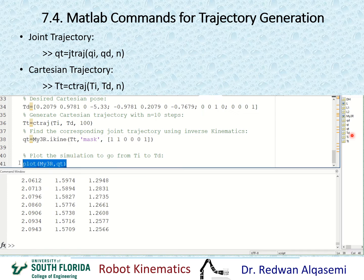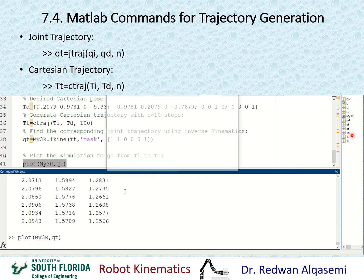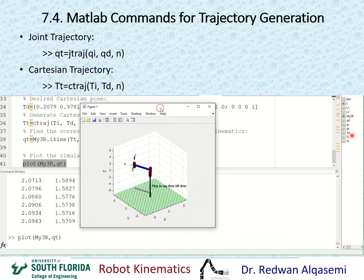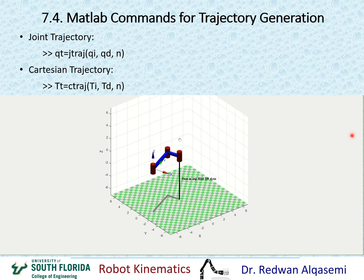Now we're ready to do the simulation. Pay attention to how the simulation goes — the end effector will follow a straight line, as opposed to the random path in the previous simulation. As you can see, it's following a straight line and also adjusting the rotation of the end effector.